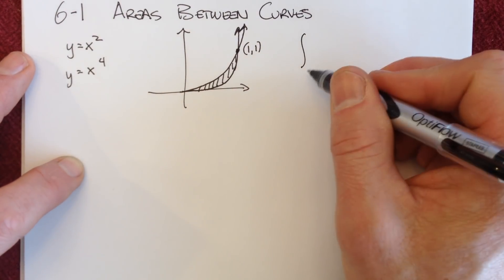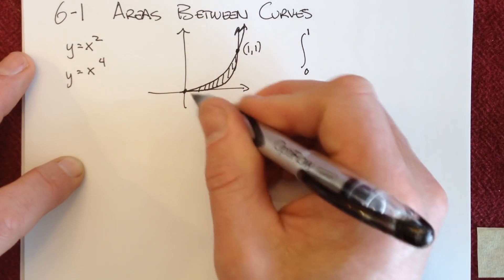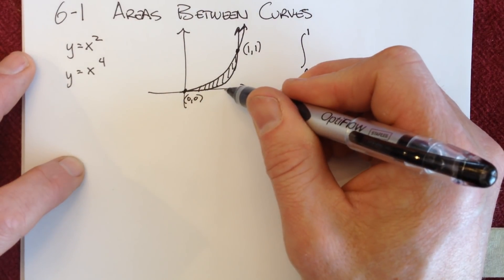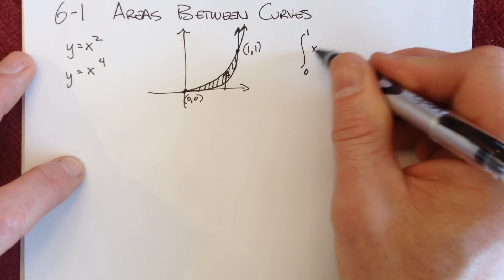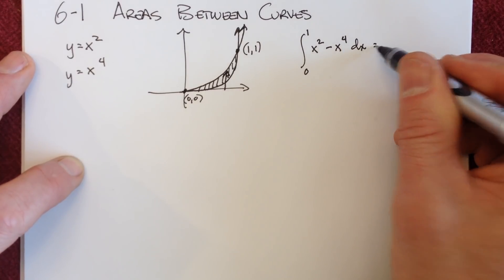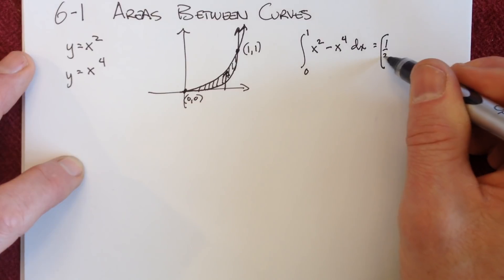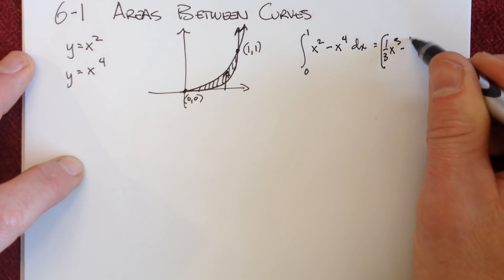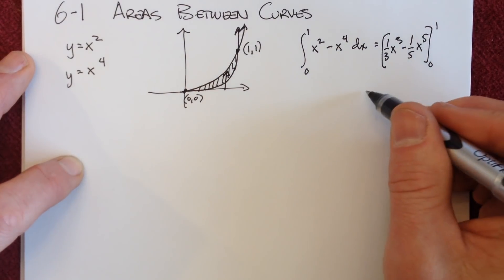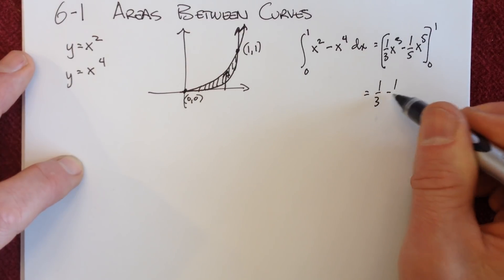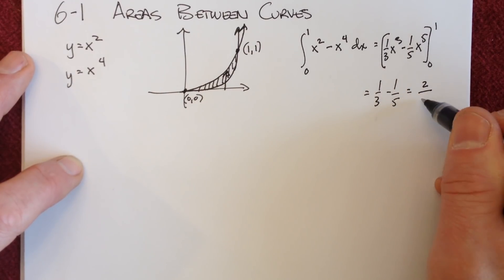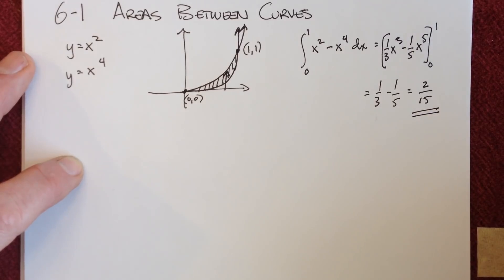The integration is really very straightforward. We're going to integrate from 0 to 1, because the other intersection point is at the origin. You just have to make sure you know what the upper curve is — it's x squared — subtracting the lower curve, x to the fourth, dx. That gives us 1/3 x³ minus 1/5 x⁵, evaluated from 0 to 1. Zero plugs in as zero, so we just get 1/3 minus 1/5, which is 2/15 as our area between those two curves.